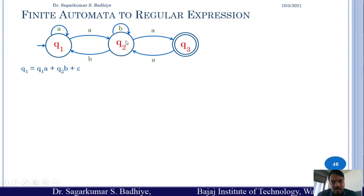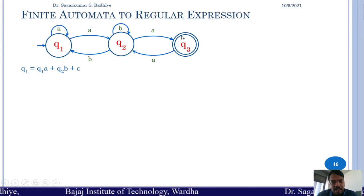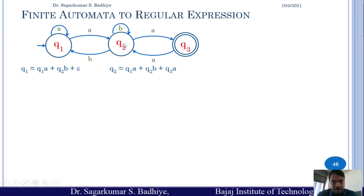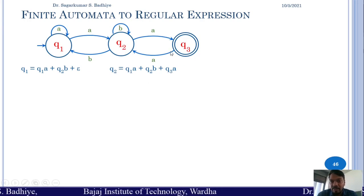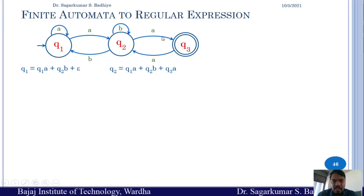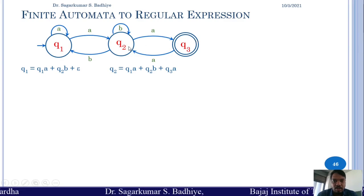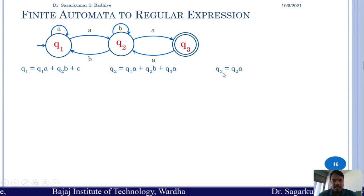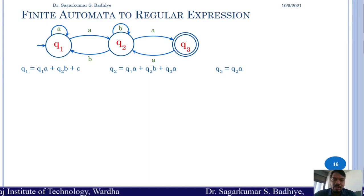Similarly, we write equations for q2 and q3. For q2, there are three input transitions: from q1 on 'a', from q2 on 'b', and from q3 on 'a'. So the equation is: q2 = q1·a + q2·b + q3·a. For q3, there is only a single incoming transition — from q2 on 'a' — so the equation is: q3 = q2·a.